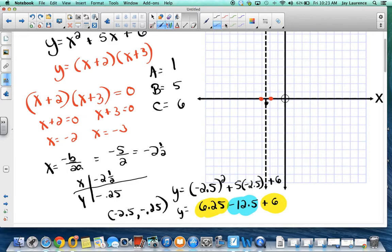So I'm going to put negative 2 and a half in for the equation. So I'm going to get y equals negative 2 and a half squared, plus 5 times negative 2 and a half. And then I'm going to add 6 to it. Well, 2 and a half times 2 and a half should be 6 and a quarter.